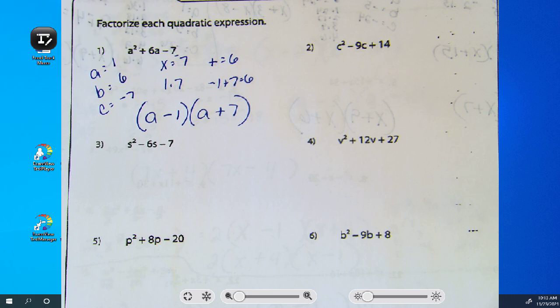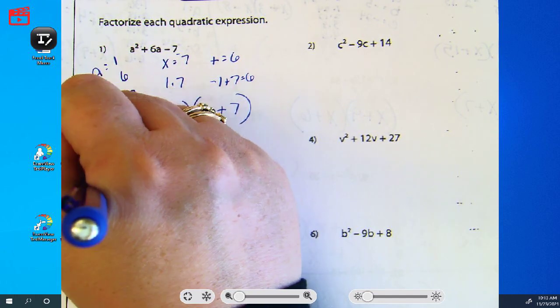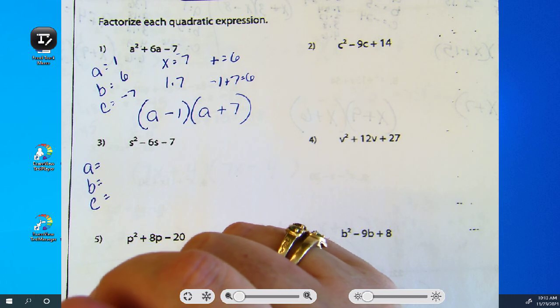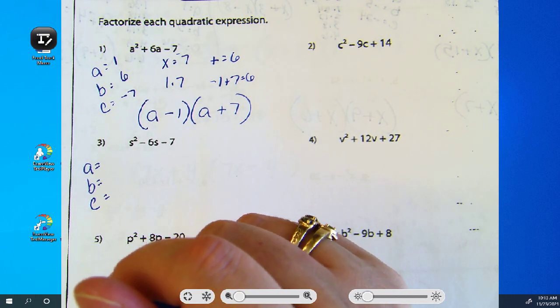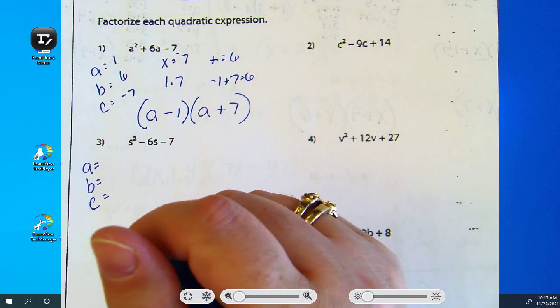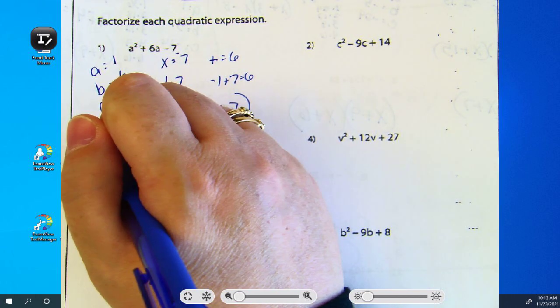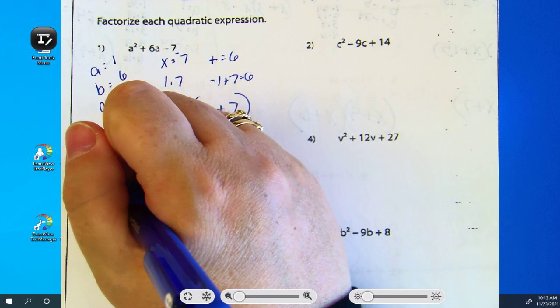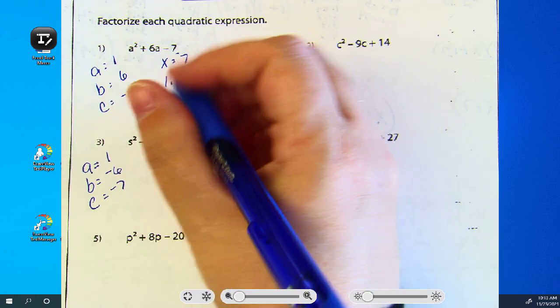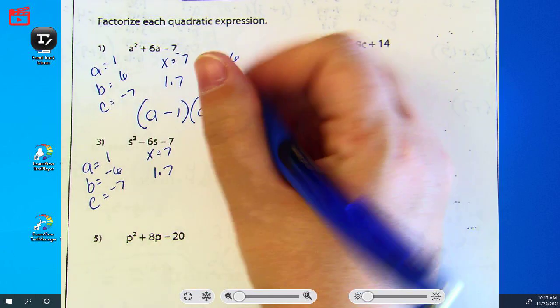Okay, number three. Who's going to talk me through this one? I'm just going to start picking people. Does anyone want to volunteer? Ethan? So we're going to multiply to get seven, which we know from the previous one is one and seven.